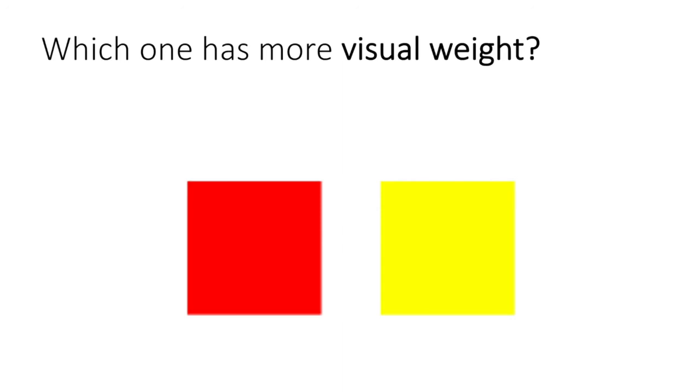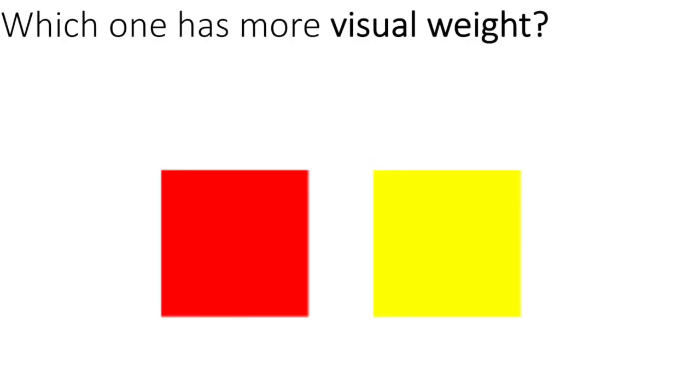Most people, when asked which has more visual weight, would say the red square — because it's darker, looks heavier, and stands out more against the background. But that's a key point: if I change the background, a lot of people change their answer to the yellow, because now the yellow's jumping out, popping against that black background. The visual weight is not just intrinsic to each object — it is part of the whole balance of the artwork you're looking at.